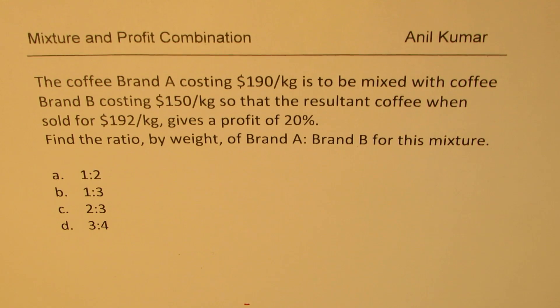The coffee brand A costing $190 per kg is to be mixed with coffee brand B costing $150 per kg so that the resultant coffee when sold for $192 per kg gives a profit of 20%. Find the ratio by weight of brand A to brand B for this mixture. You are given four choices. There are traditional ways of solving it but we'll discuss efficient way of solving.